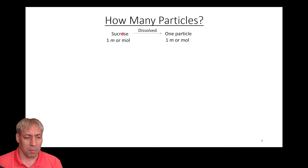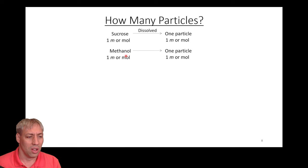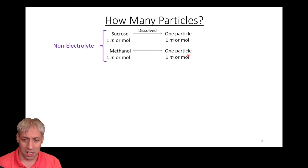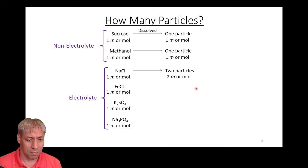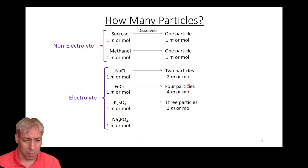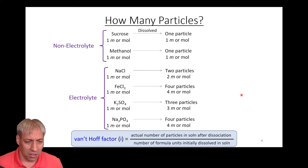Take sucrose, for example — it's similar to glucose. One mole in solution gives you one mole of particles. Similarly, methanol or ethanol are non-electrolyte species — they don't break apart, they stay as a single-component species. But salts like sodium chloride, iron chloride, potassium sulfate, and sodium phosphate are electrolyte species that break apart in solution. With sodium chloride, one mole gives two moles of particles. Iron chloride gives four particles. Potassium sulfate gives three particles. Sodium phosphate gives four particles because it breaks into PO₄³⁻ and three Na⁺ ions.